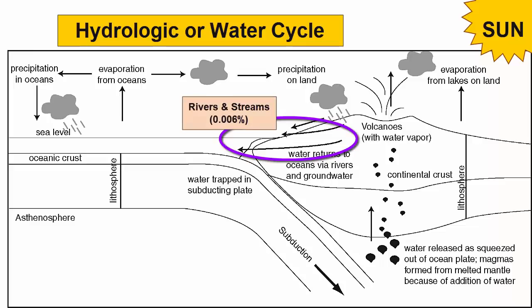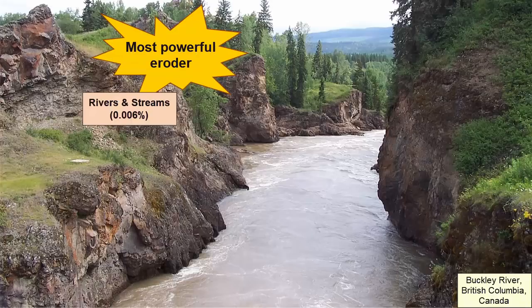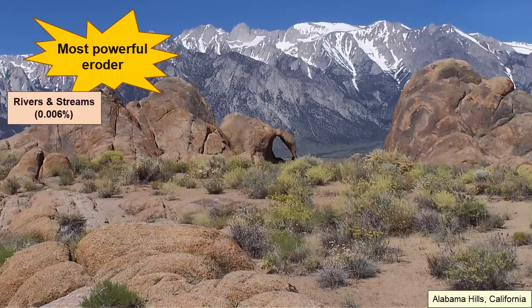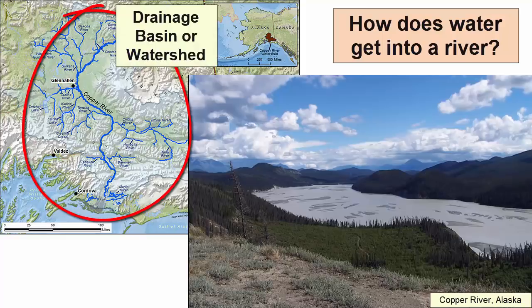Now let's focus on the 0.006% of fresh water found in rivers. Despite being such a minor component of water storage, running water is the most powerful erosional agent at work on planet Earth. Running water weathers, erodes, and deposits material across Earth's surface, producing a multitude of unique and varied landforms. Even in deserts where water runs on the surface for only a few weeks a year, that running water is still the most powerful force sculpting that landscape.